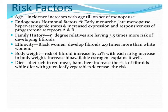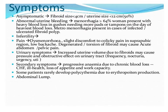Risk factors include age — the incidence of fibroids increases with age until the onset of menopause, after which fibroids regress due to loss of hormonal stimulation. Early menarche and late menopause are both responsible for fibroid development. Family history is significant — first-degree relatives have three to three-and-a-half times more risk. BMI is also related, and a diet rich in red meat, ham, and beef increases the risk of fibroids.